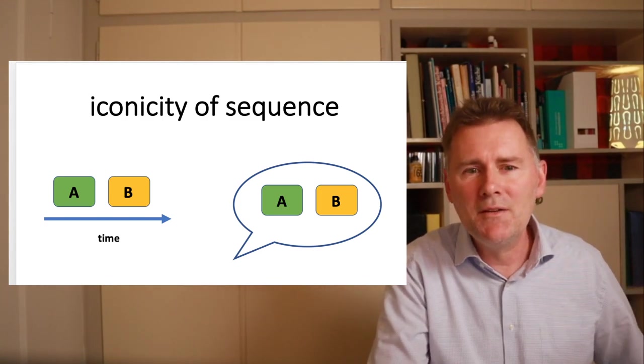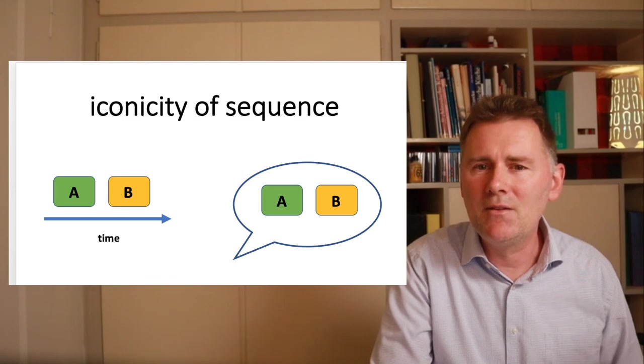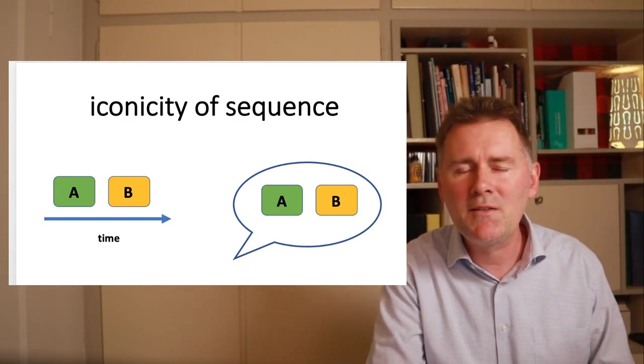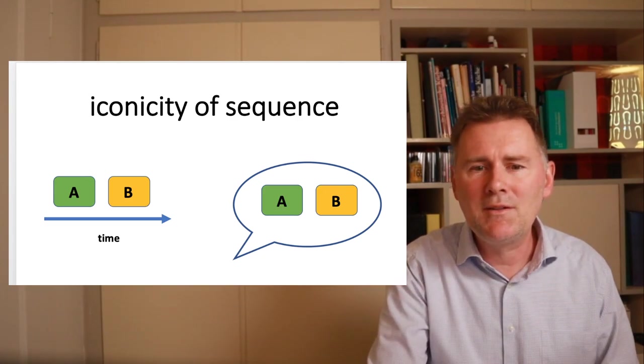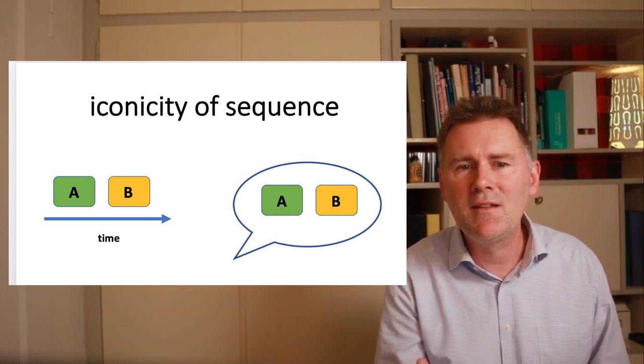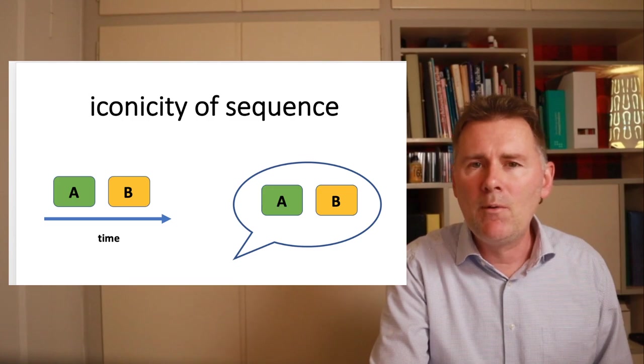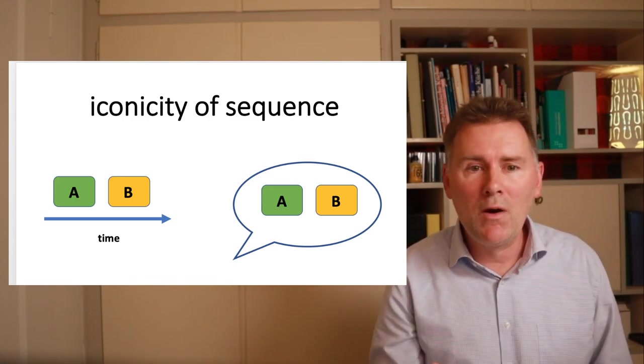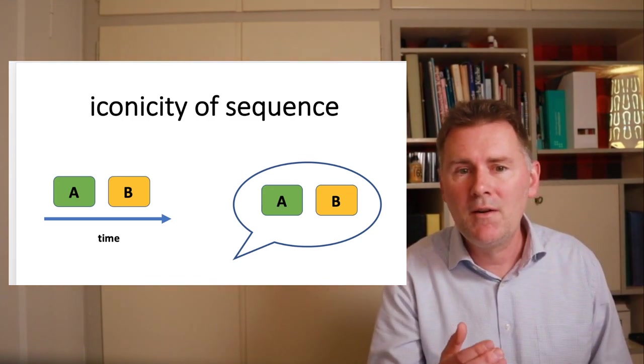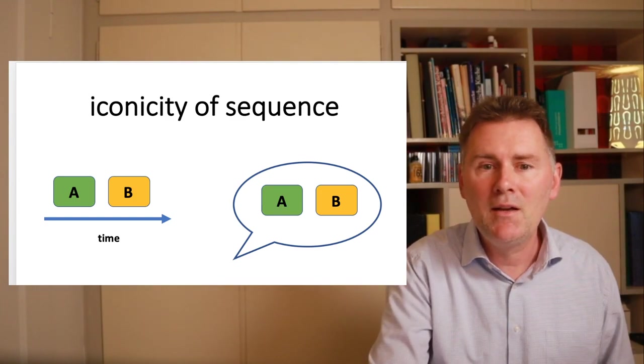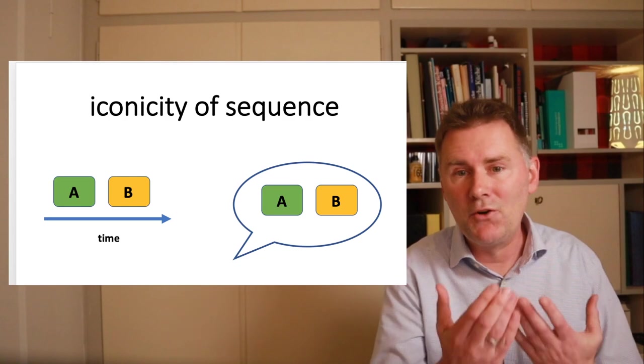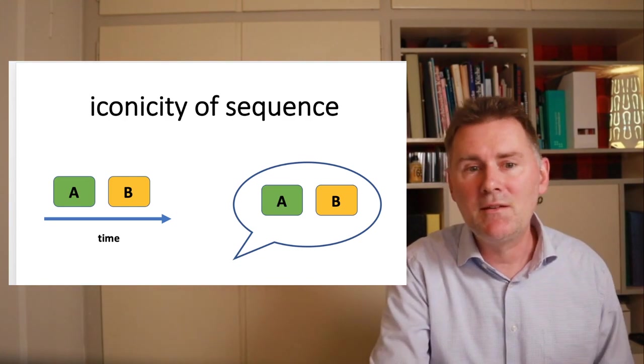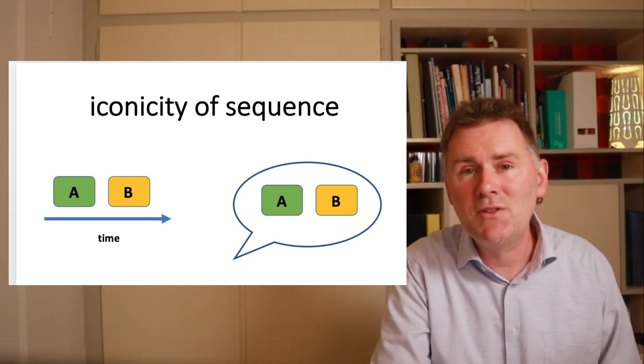What does that mean? Well, in a nutshell, it means that the temporal order of parts in an utterance line up with the temporal order of the events that they describe. So when we talk about two events and one happened before the other, Iconicity of Sequence would mean that the earlier event, event A, is expressed first. And the later event, event B, is mentioned after that.